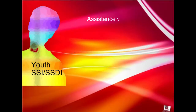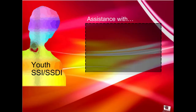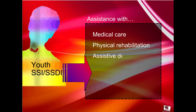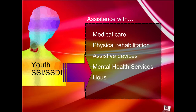Youth receiving SSI or SSDI, or those who would be eligible for such, are likely to need assistance with such things as medical care, physical rehabilitation, assistive devices, mental health services, housing, transportation, and other ancillary services before, during, and after their transition from school to adult life and work.